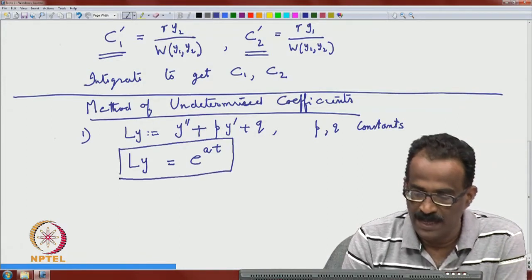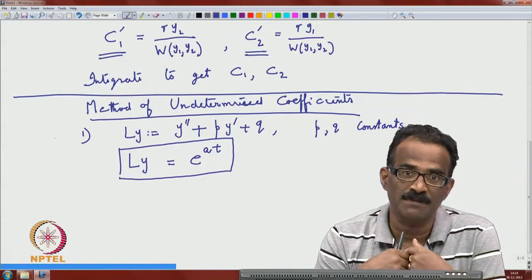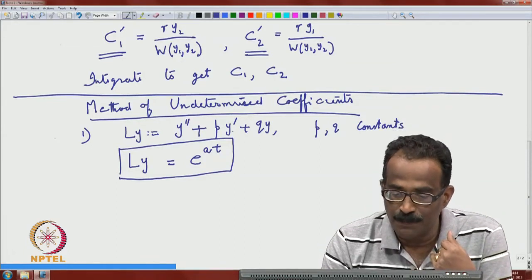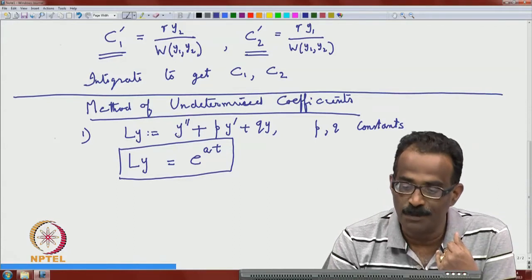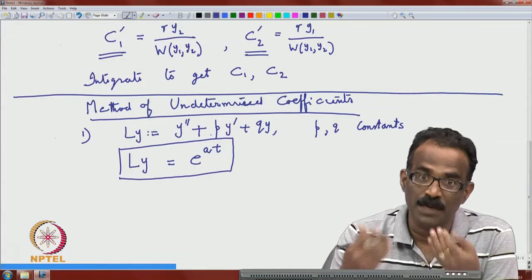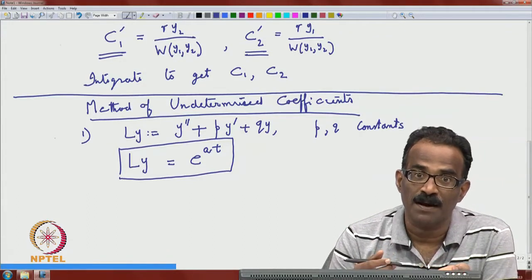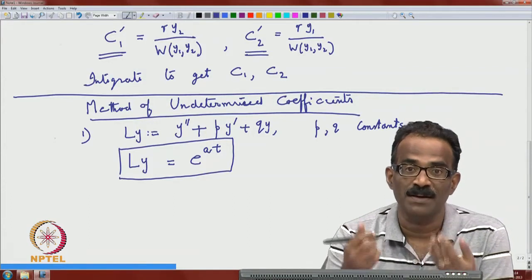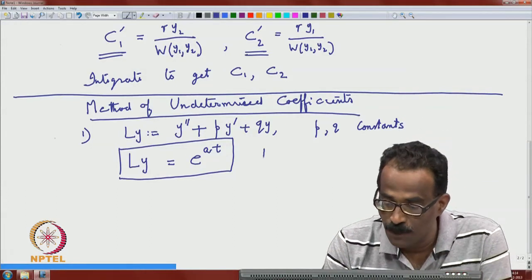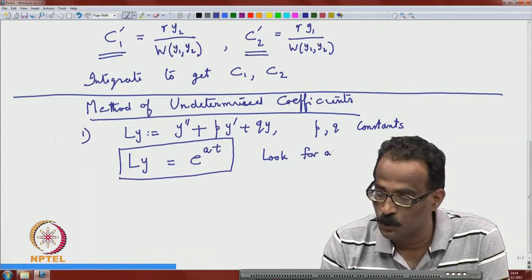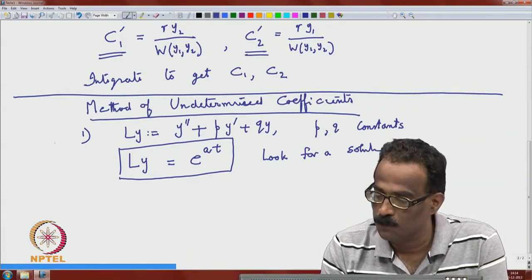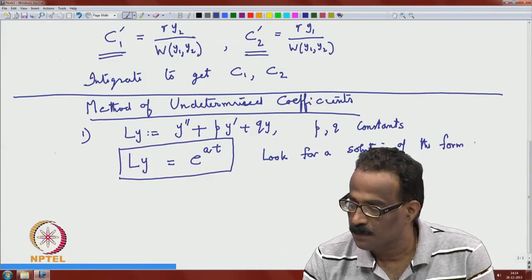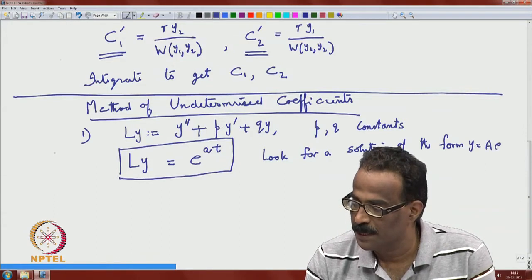We want to solve L(y) = e^(at). Since y, y', y'' are all proportional when y = e^(rt), and e^(at) is available on the right-hand side, the best motivation is to look for a solution of the form y = A·e^(at), where A is an unknown constant.